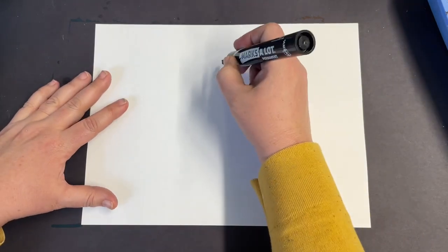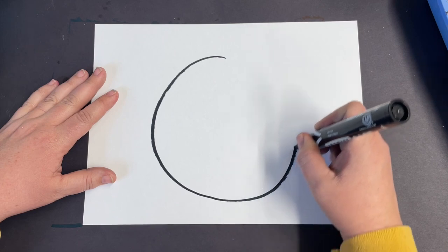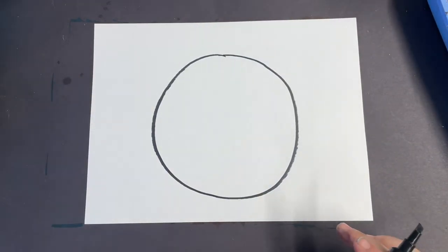For your Brito-inspired soccer ball, we are going to start with a circle. Don't overthink it. There's going to be so much going on in this picture that if your circle isn't perfect, no worries.